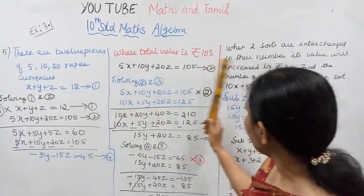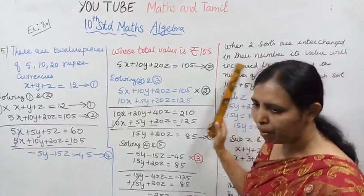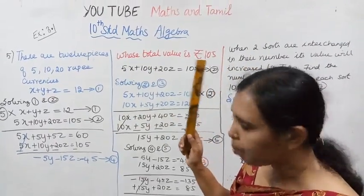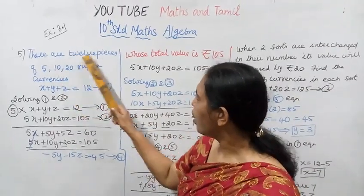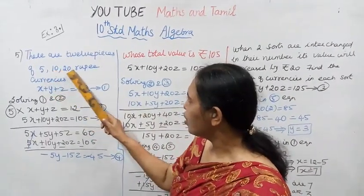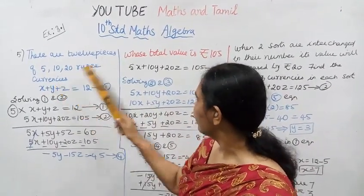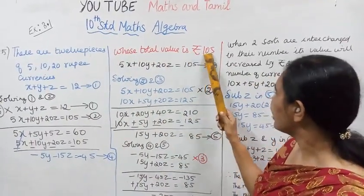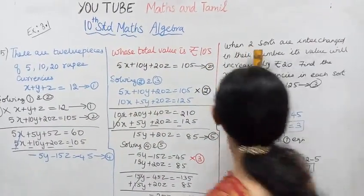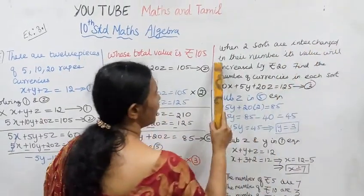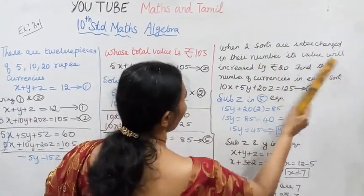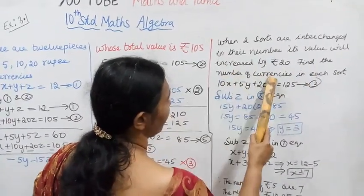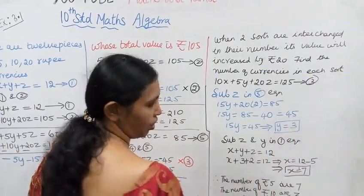Question 3, part three. There are 12 pieces of 5, 10, and 20 rupee currencies whose total value is Rs. 105. When 2 sorts are interchanged in their number, its value will increase by 20. Find the number of currencies in each sort.